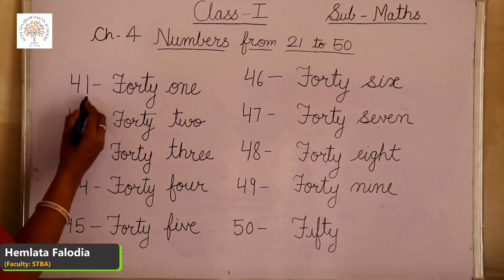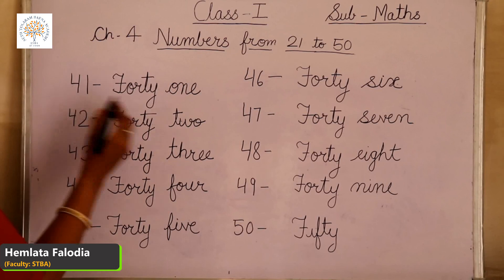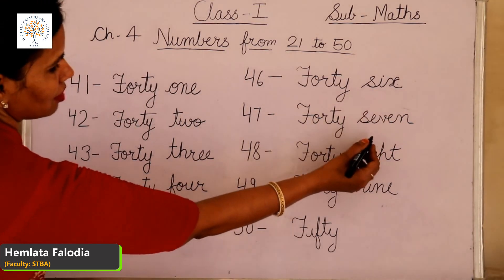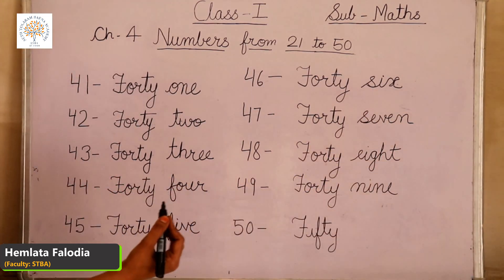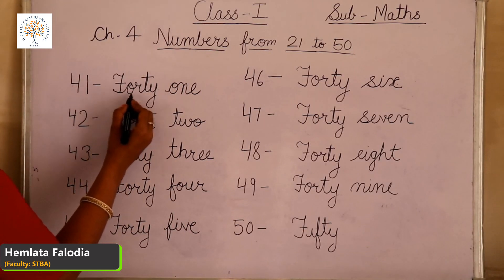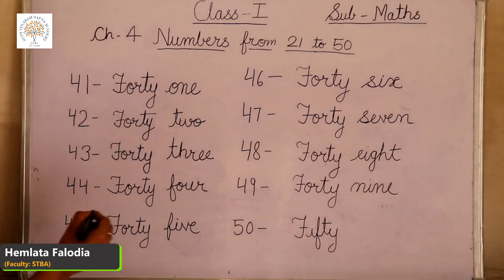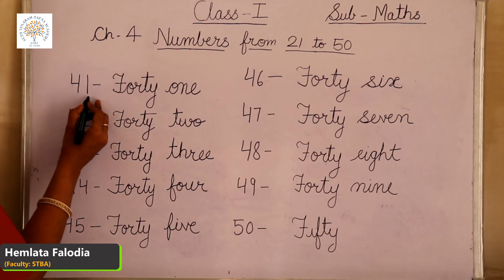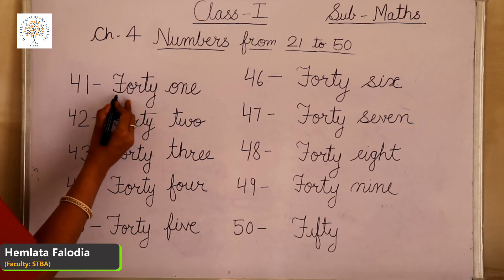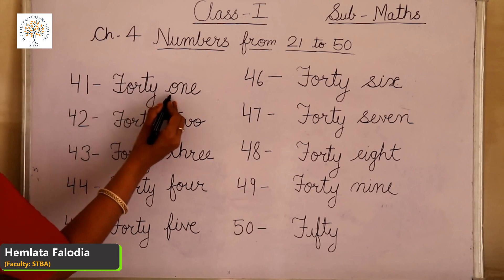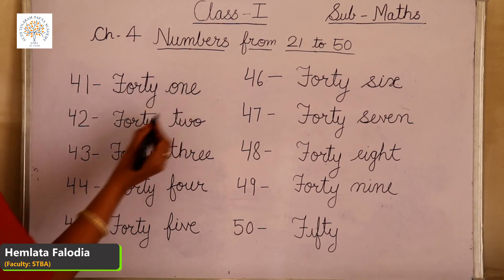Now come to the sequence of 40s. It is also very easy — we have already done 1 through 9 in our last videos, and you only need to learn the spelling of FORTY: F-O-R-T-Y. So let's start with 41. 40 plus 1 is 41. Number name: F-O-R-T-Y, 40, O-N-E, 1.